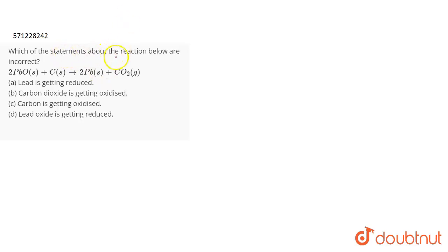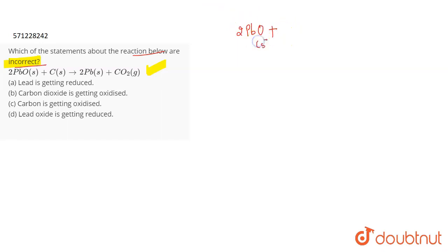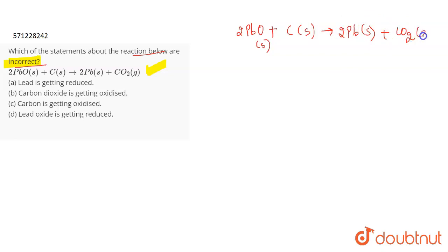The question is: which of the statements about the reaction below are incorrect? So we have to determine which of the following are incorrect statements about the given reaction. Let us write down the reaction: 2PbO (solid) plus carbon (solid) gives 2Pb (solid) plus CO2 (gas).